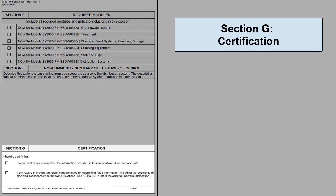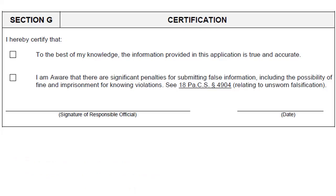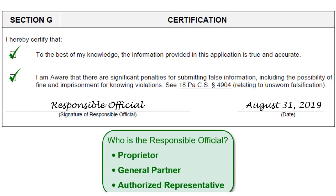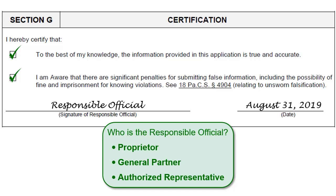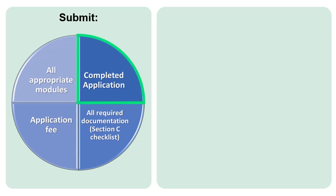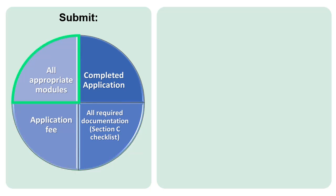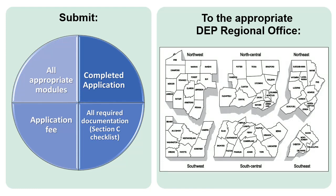Section G is for certification that all information provided in the application is true and accurate. After checking the boxes certifying the information is true and accurate, the application should be signed and dated by the responsible official — this may be the proprietor, a general partner, or an authorized representative responsible for the overall operation of the facility. Once completed, submit the application, the documentation required as reviewed in Section C, and the $50 application fee, along with all appropriate modules, to the DEP regional office that covers the county in which the water system is located. The instructions include addresses for each DEP regional office.